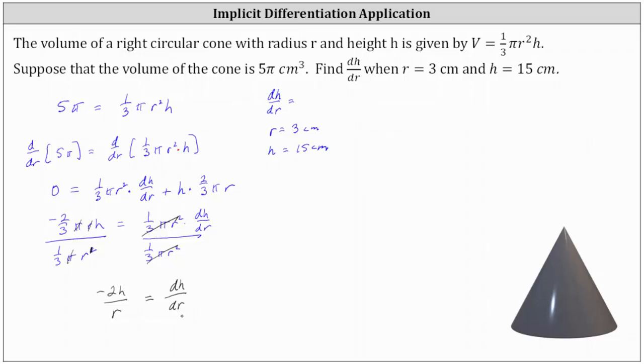And now we can find dh/dr when r equals 3 centimeters and h equals 15 centimeters. dh/dr is equal to negative 2 times 15 centimeters divided by 3 centimeters.